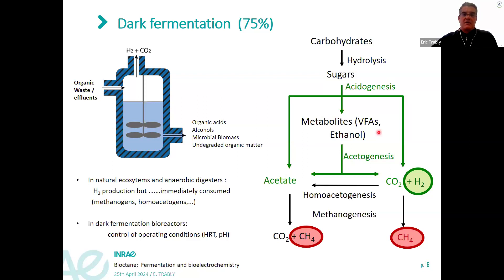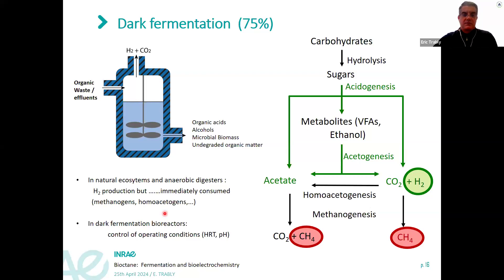Among the metabolites — what we call VFAs (volatile fatty acids) — we have propionic acid, which is of specific interest in the BIOCTANE project. These compounds then go through bioacetogenesis, converted to acetate or hydrogen, and then methanogens convert acetate and hydrogen to methane. In dark fermentation, we try to stop this reaction and focus only on hydrogen and molecule production. The key challenge is stopping the side reactions that consume the products.